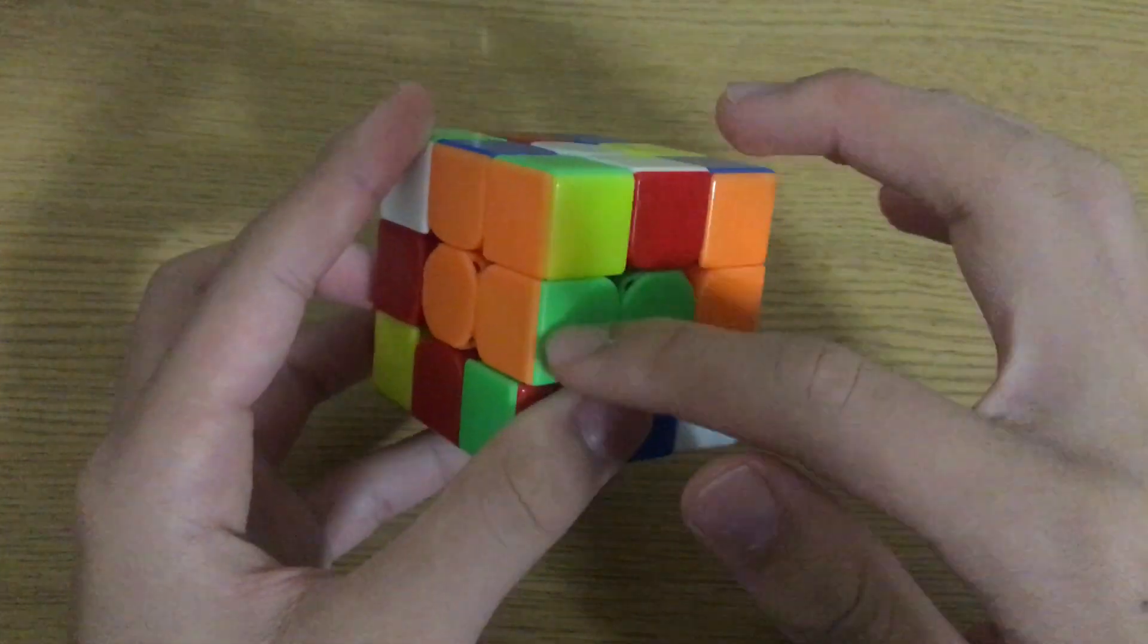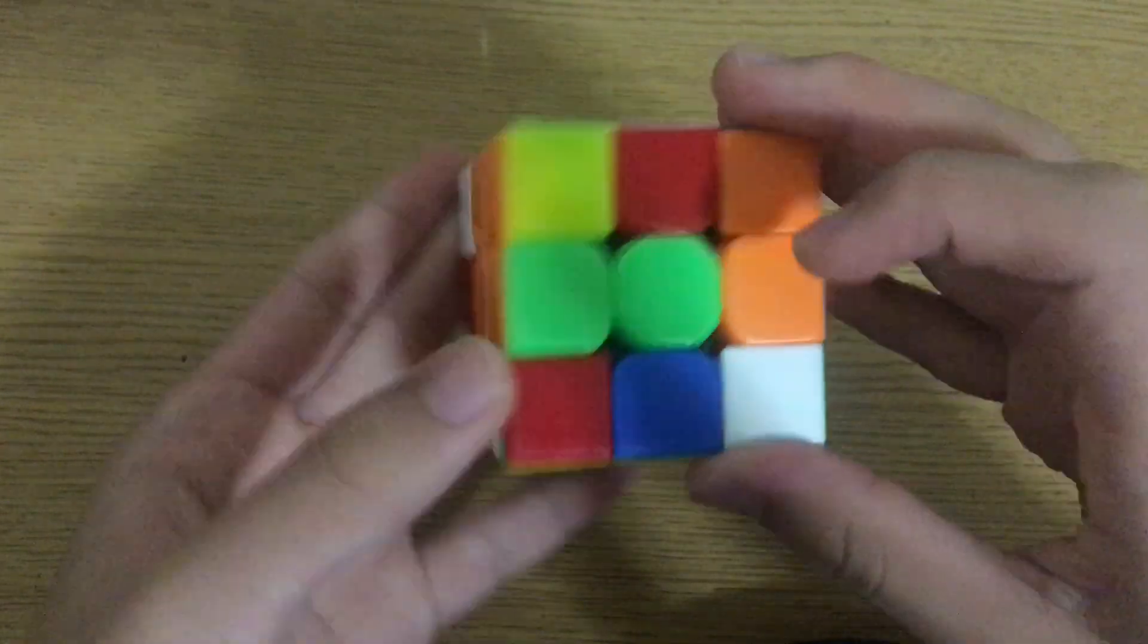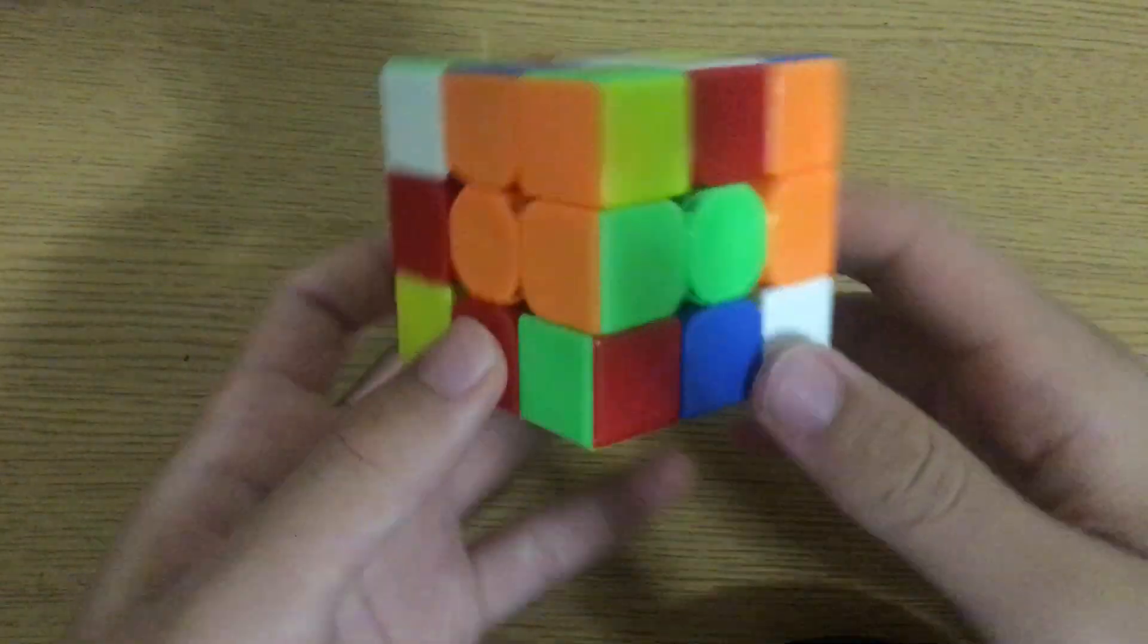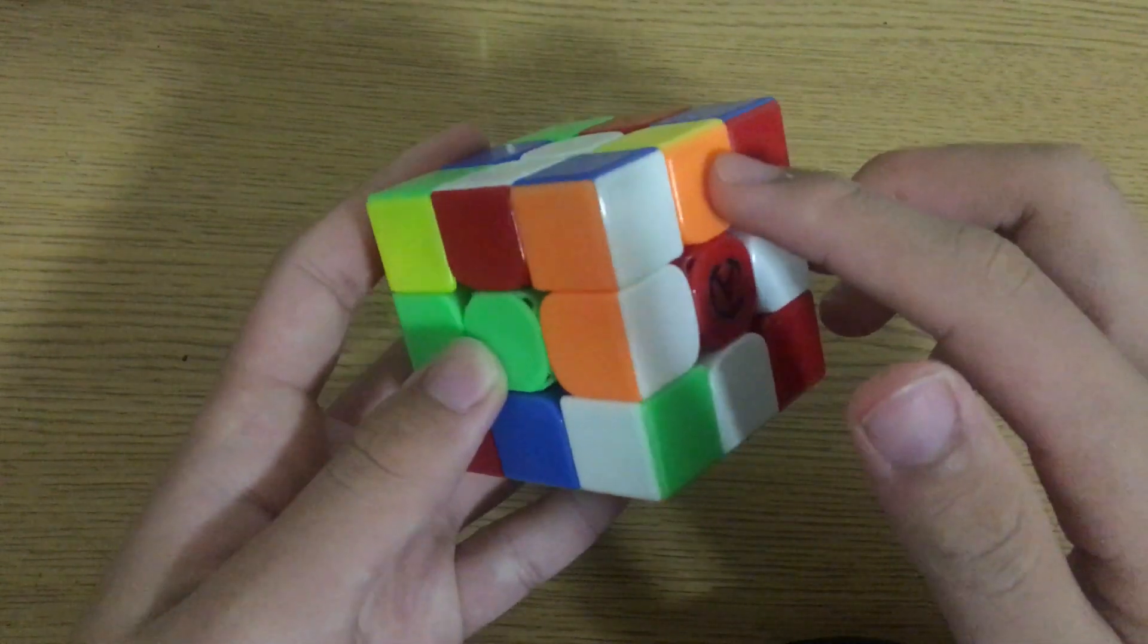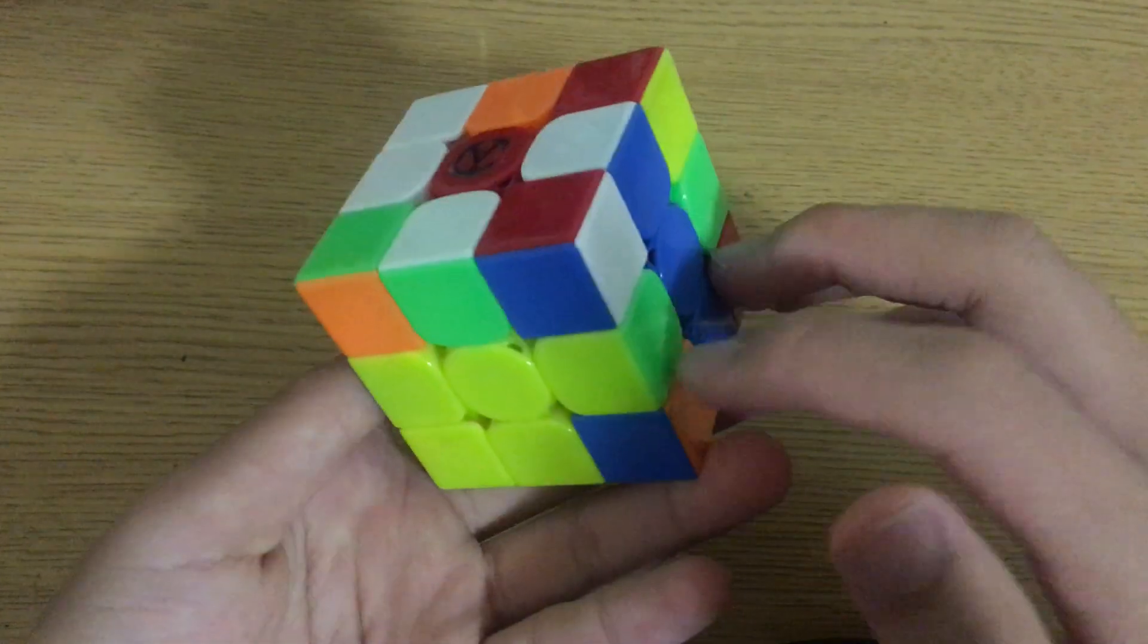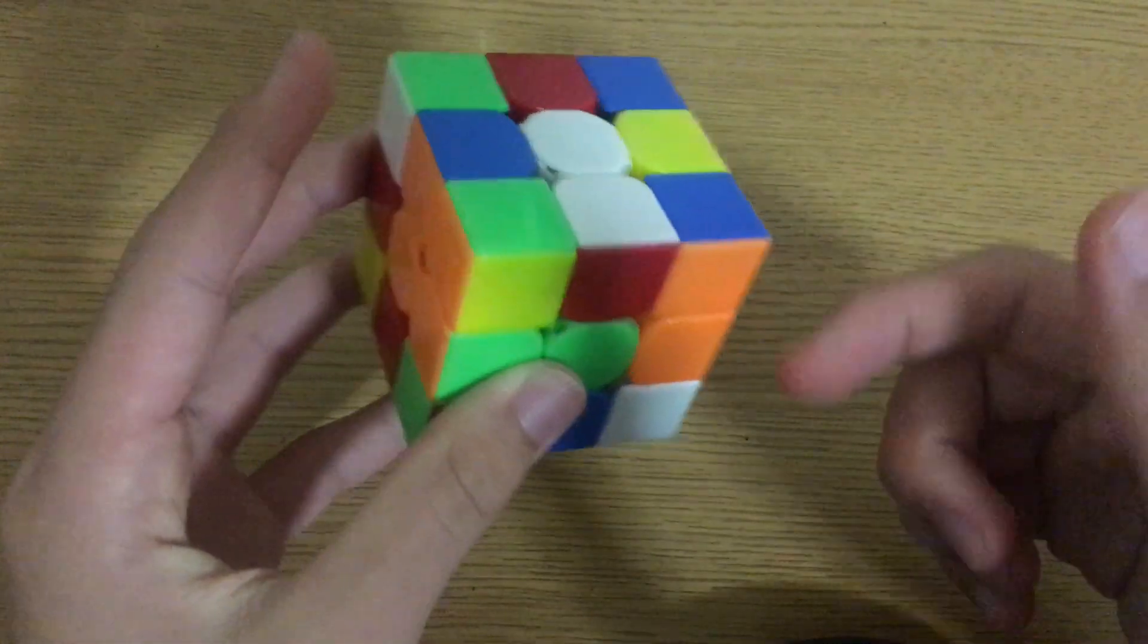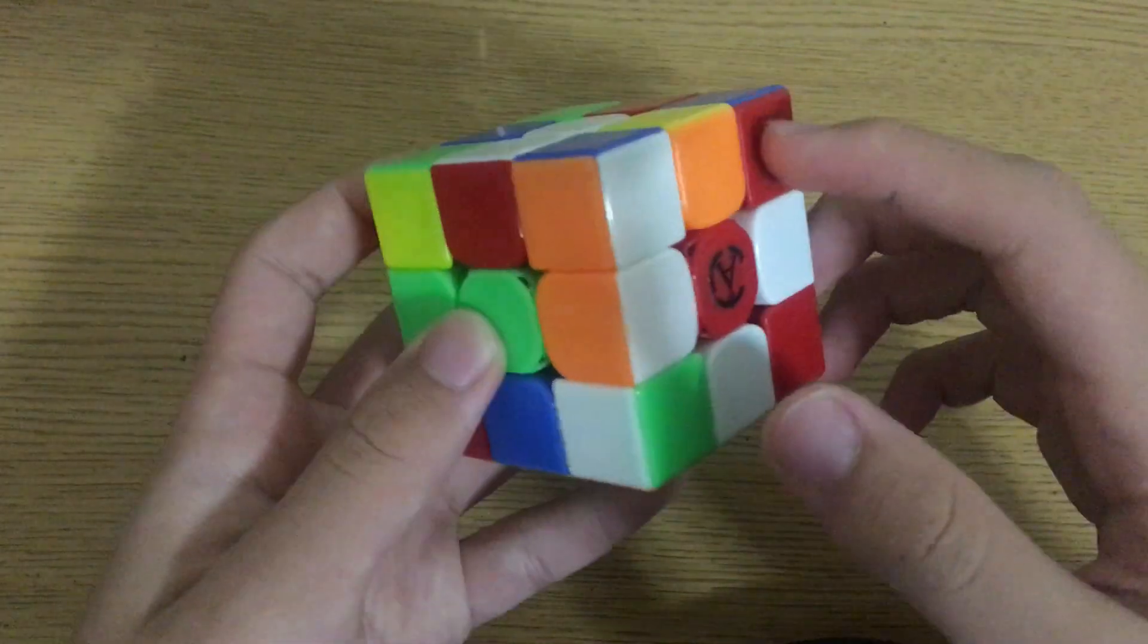You may also notice that this F2L edge is solved along with these two centers, and its corresponding corner is right above it, ready to insert along with this edge and along with this cross edge to form a block that corresponds to this solved edge.